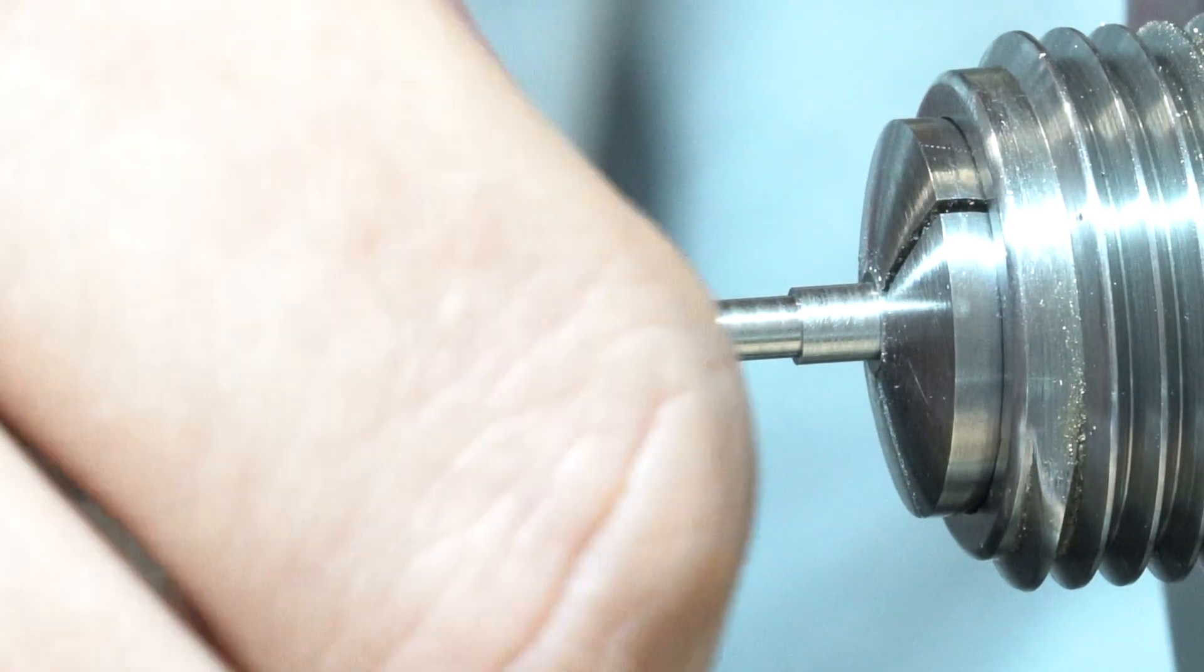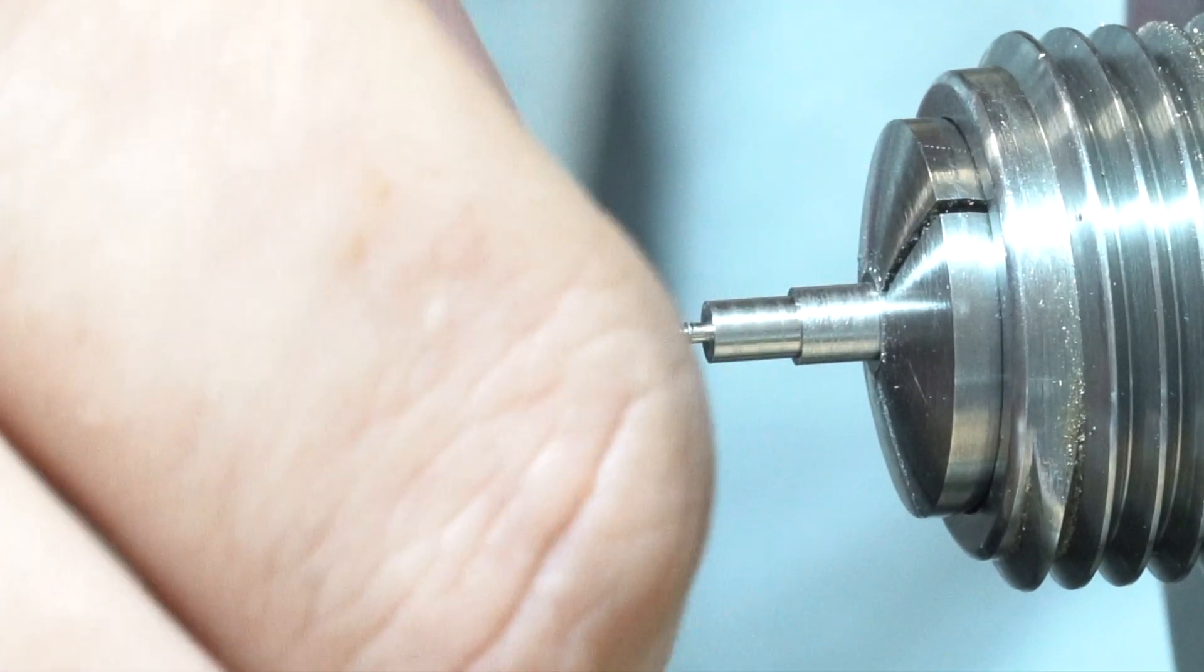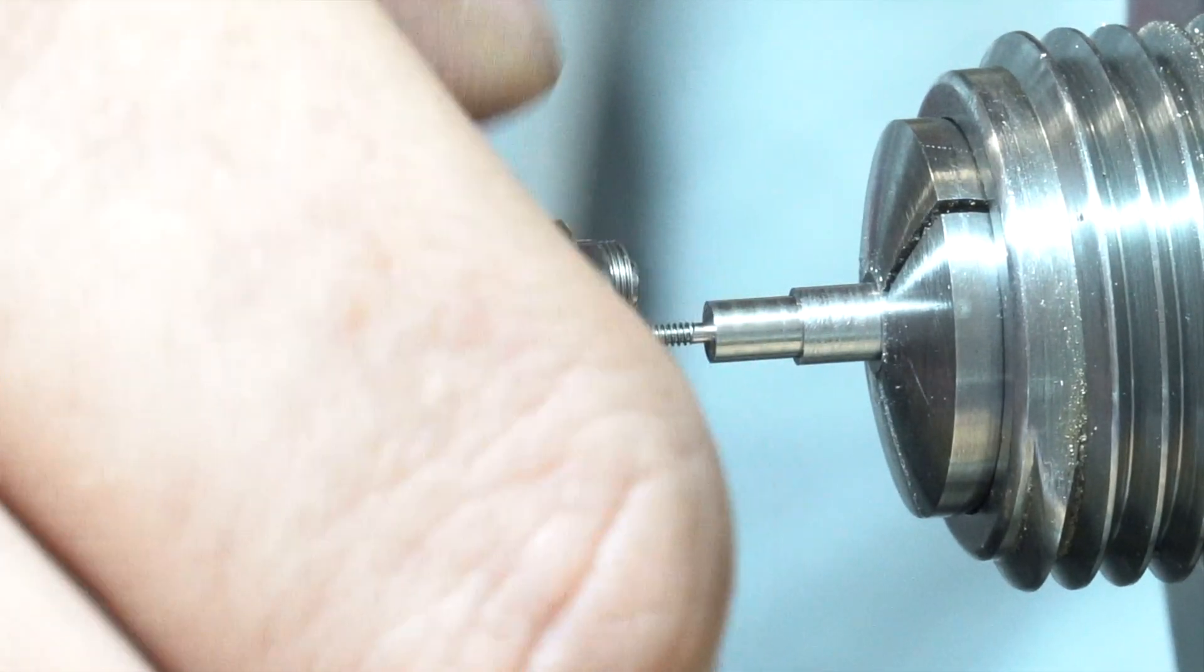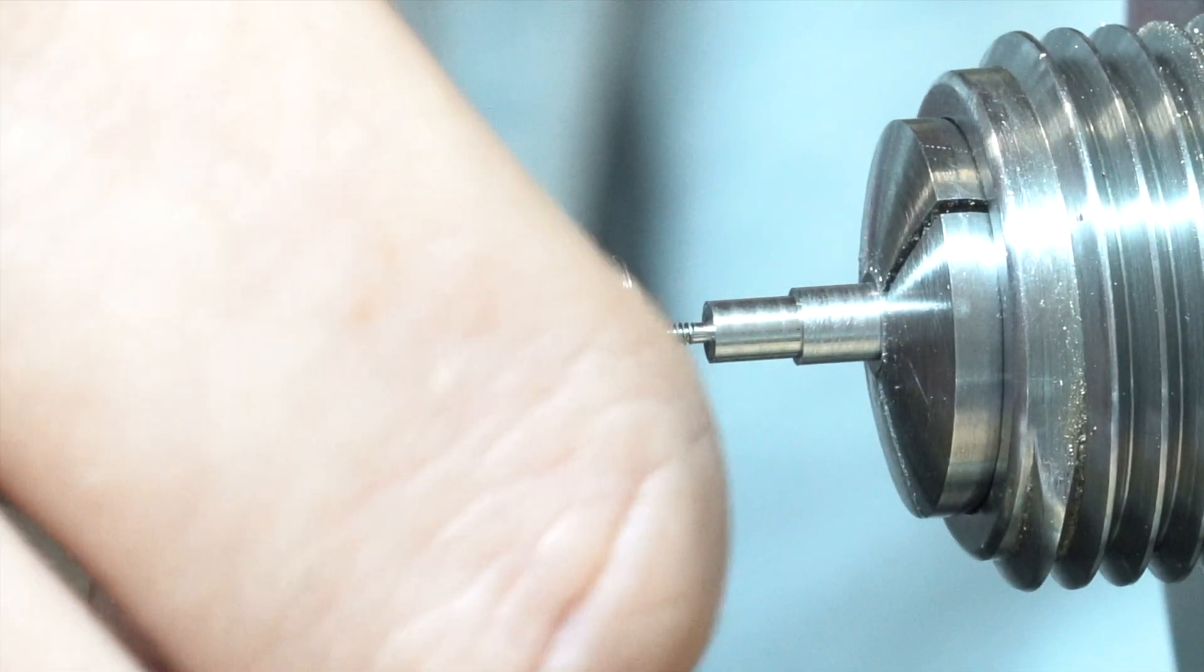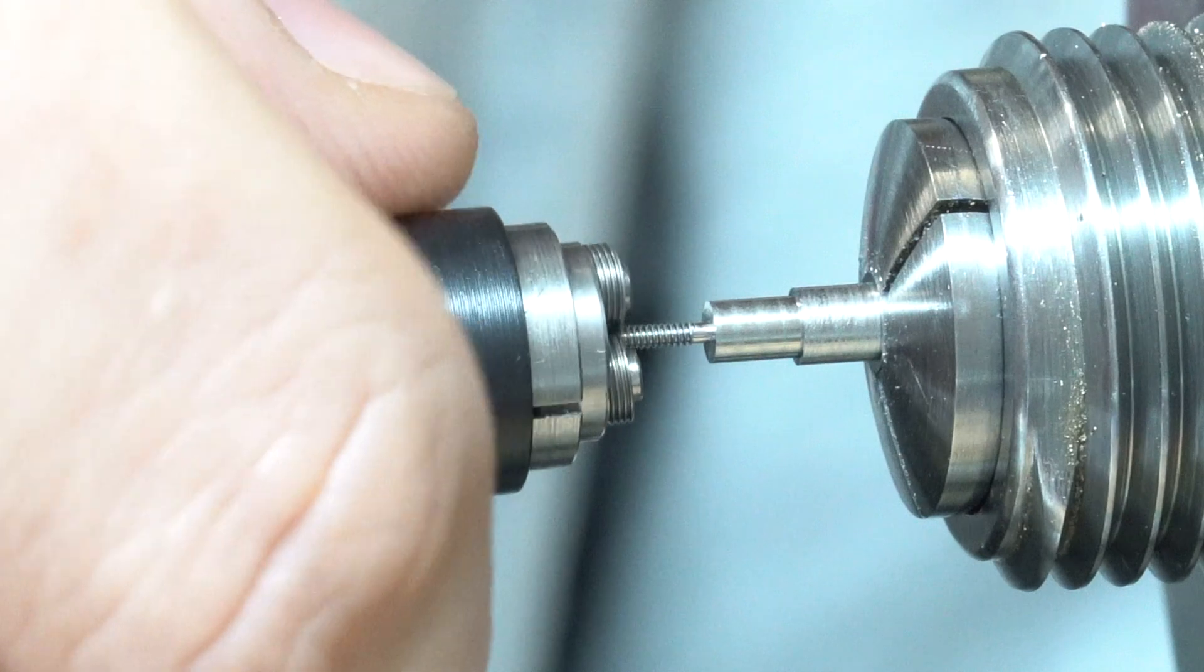I then loosen off the tailstock's grip on the roller die and manually remove it. One thing to note here is that I didn't use oil but in the future I will be as that preserves the life of the rollers and leaves a nicer thread.